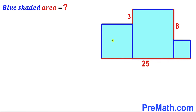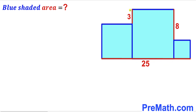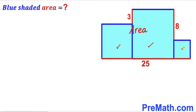Welcome to pre-math. In this video we have got these three squares of different dimensions put together as you can see in this given diagram, such that this horizontal length is 25 units, whereas this tiny vertical length is 3 units and this vertical length is 8 units. Our task is to calculate the area of this blue shaded region — the area of this square, this square, and this square combined.